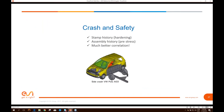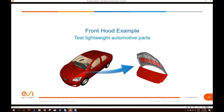Regarding crash and safety: we want to bring the stamping history of parts, especially hardening, because hardening will make parts stiffer and change how the structure behaves in terms of energy absorption. The assembly history is also important because very often you're adding stress, and that pre-stress can change behavior or bring you closer to rupture. What we want is much better correlation between the actual crash test and the simulated one.